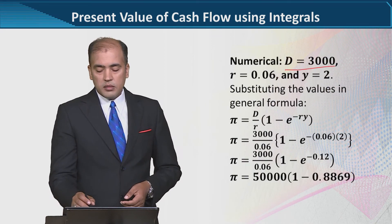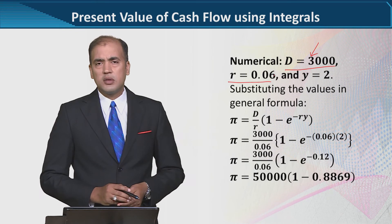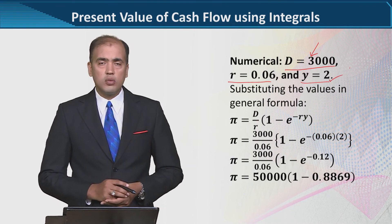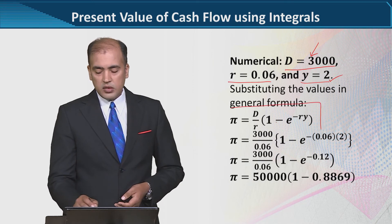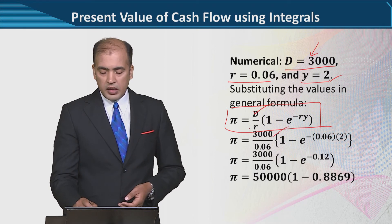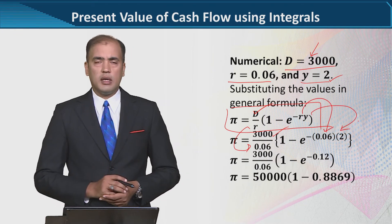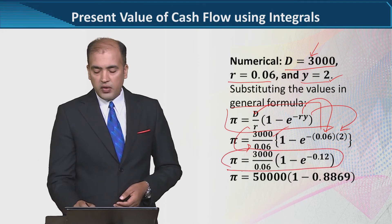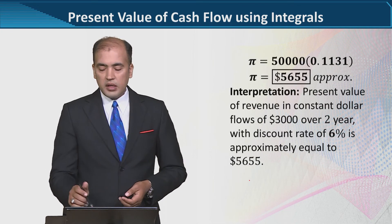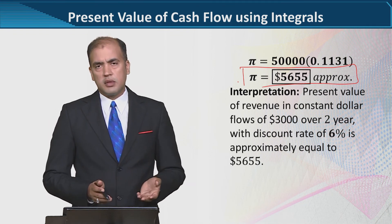Now doing a numerical example will make this further clear. The revenue flow per year is 3,000, the discounting rate is 0.06 — that is 6% — and the number of years is 2. We substitute these values into the formula we derived in the last step: D equals 3,000, R equals 0.06, and Y equals 2. You can pause the video, perform these calculations, and verify. Finally, the answer will be approximately 5,655 in currency units.